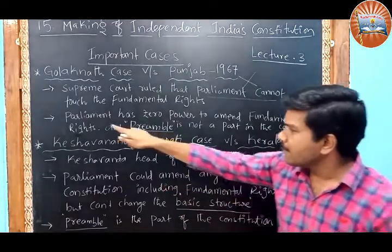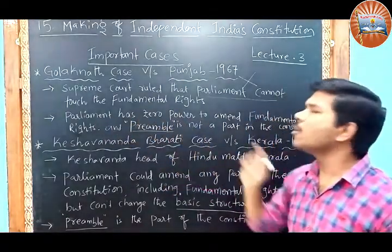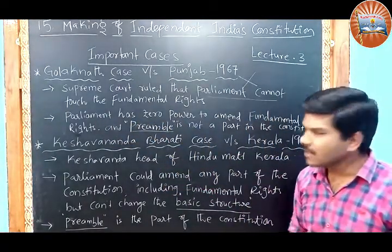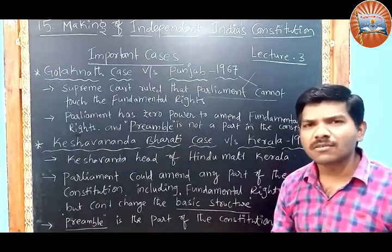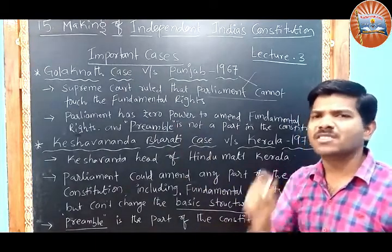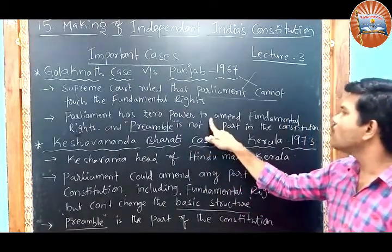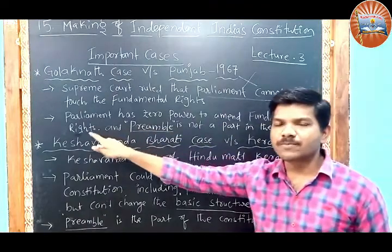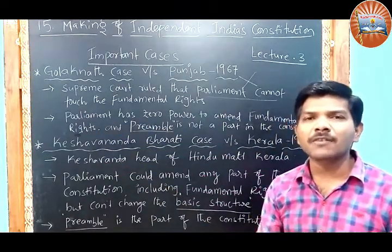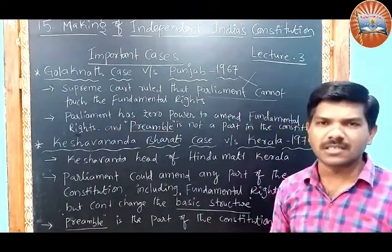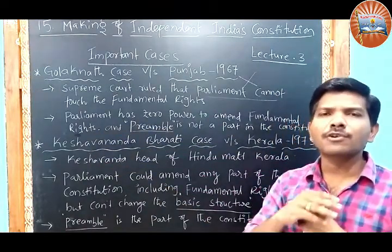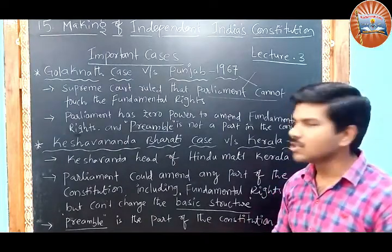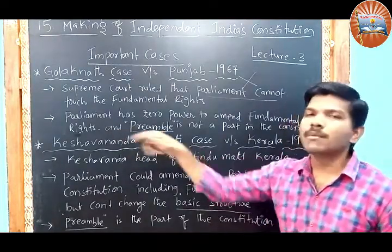Parliament has zero power. They stated that Parliament has nothing — no power, zero power — to amend the fundamental rights. Parliament cannot amend the fundamental rights; Parliament does not have any power to change the fundamental rights. This judgment was given in 1967 in the Golaknath case.